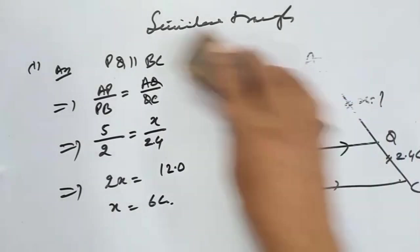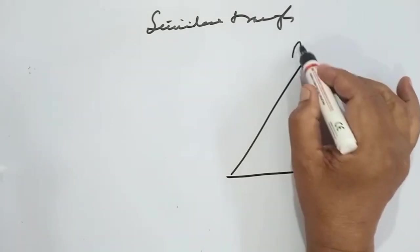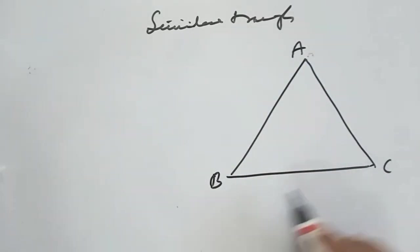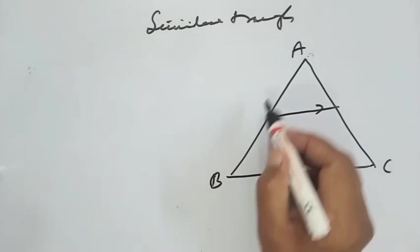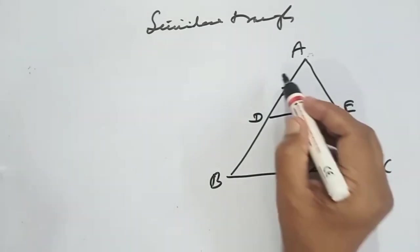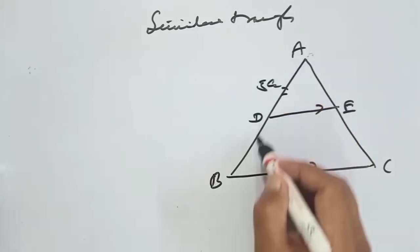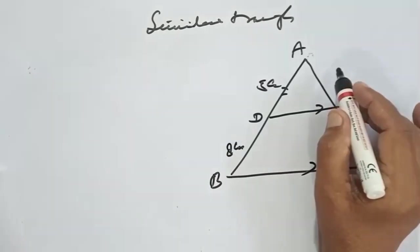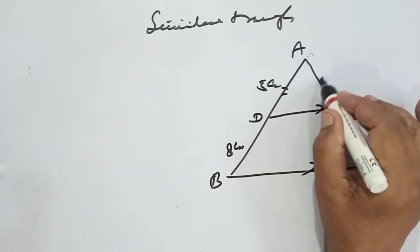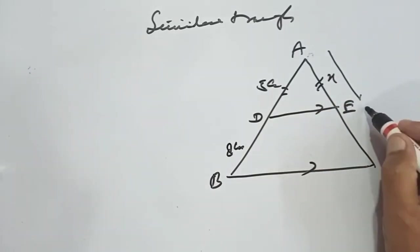Next question. ABC triangle, where DE is drawn parallel to base BC, such that AD is 5 cm, AB is 5 cm, and DB is 8 cm. AE is x and this whole AC is given as 6.5 cm.